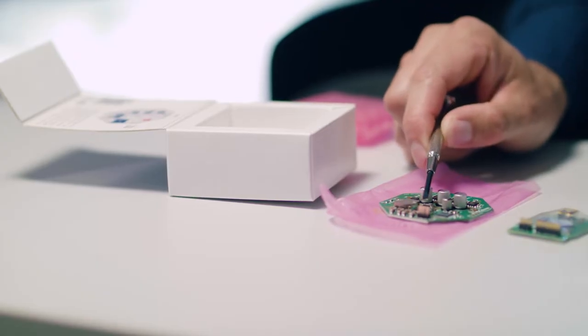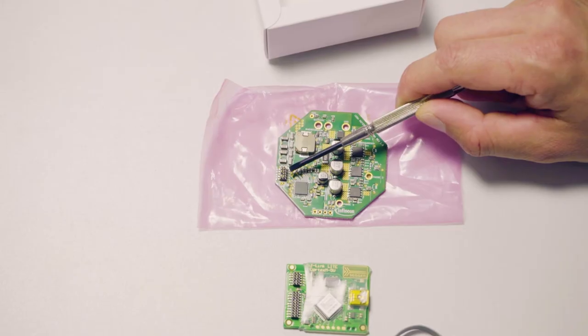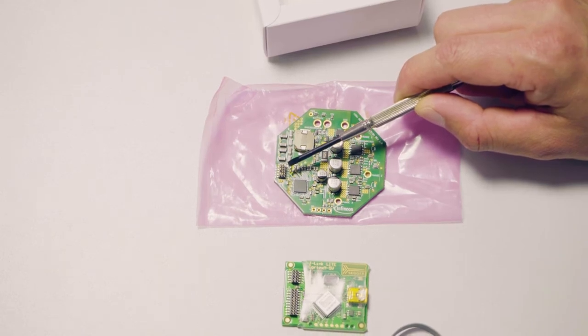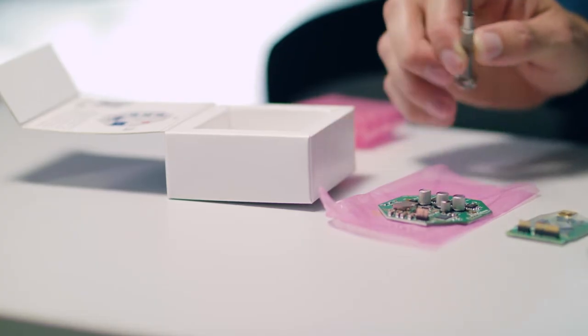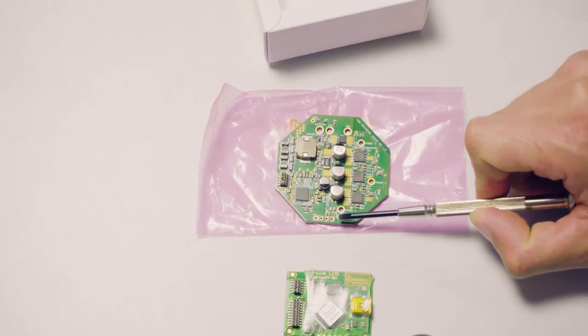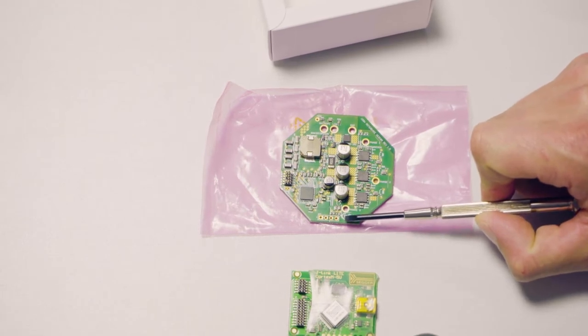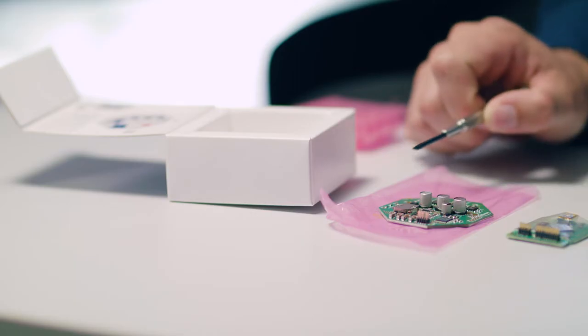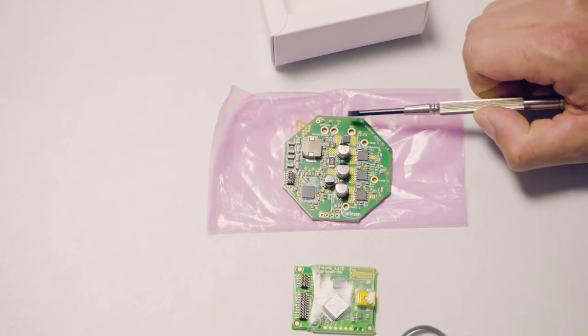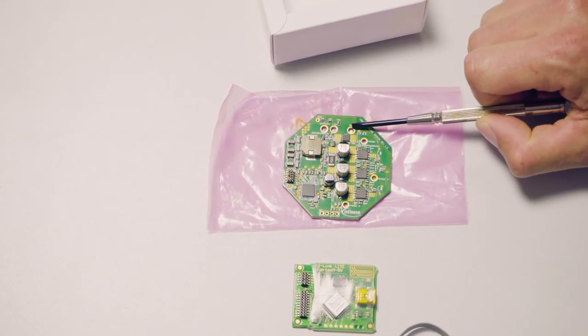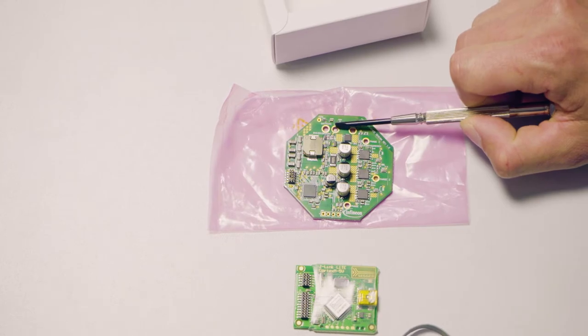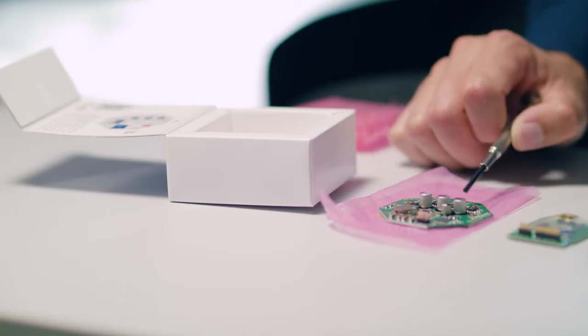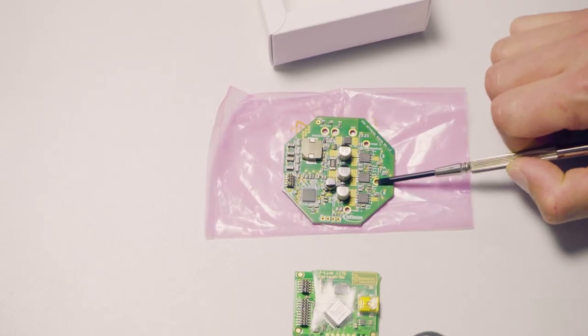Here on this side you have the connector for the debugger where you can directly control the microcontroller. On the bottom of the PCB you also have the possibility to connect UART communication. On the top of the board you have the power connector for battery and ground as well as a LIN connection. Close to the MOSFETs you have the connections for the motor terminals.